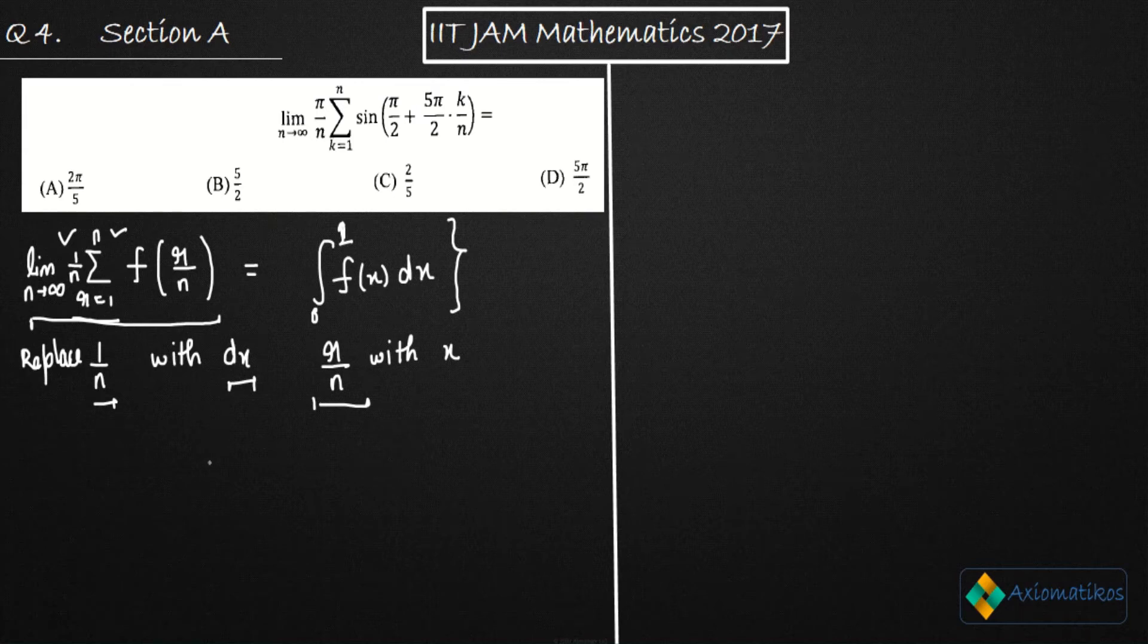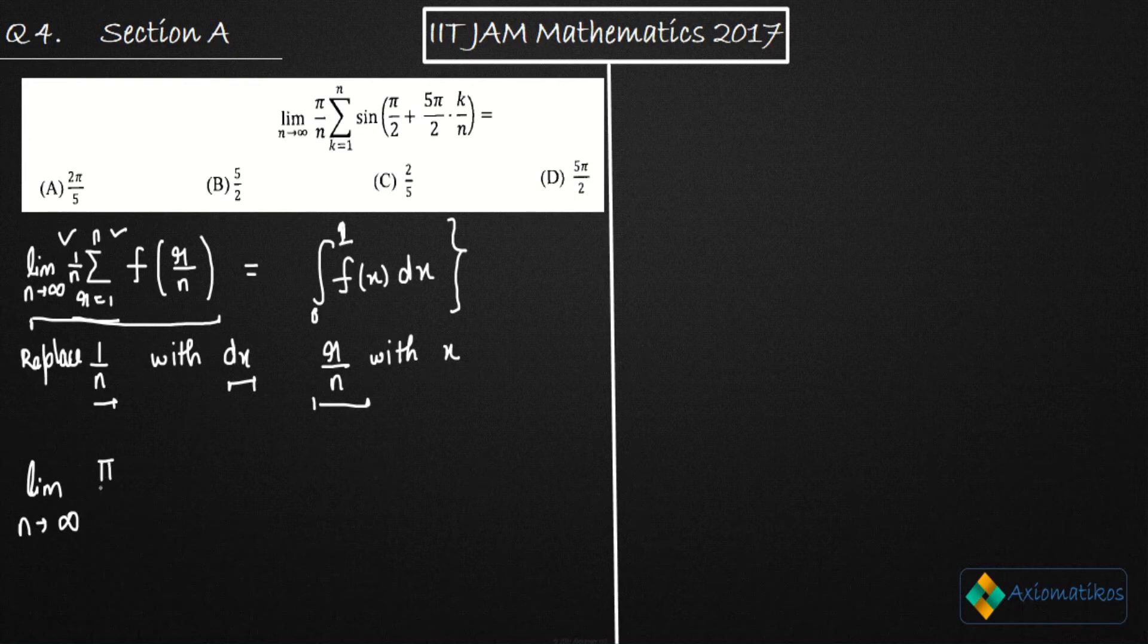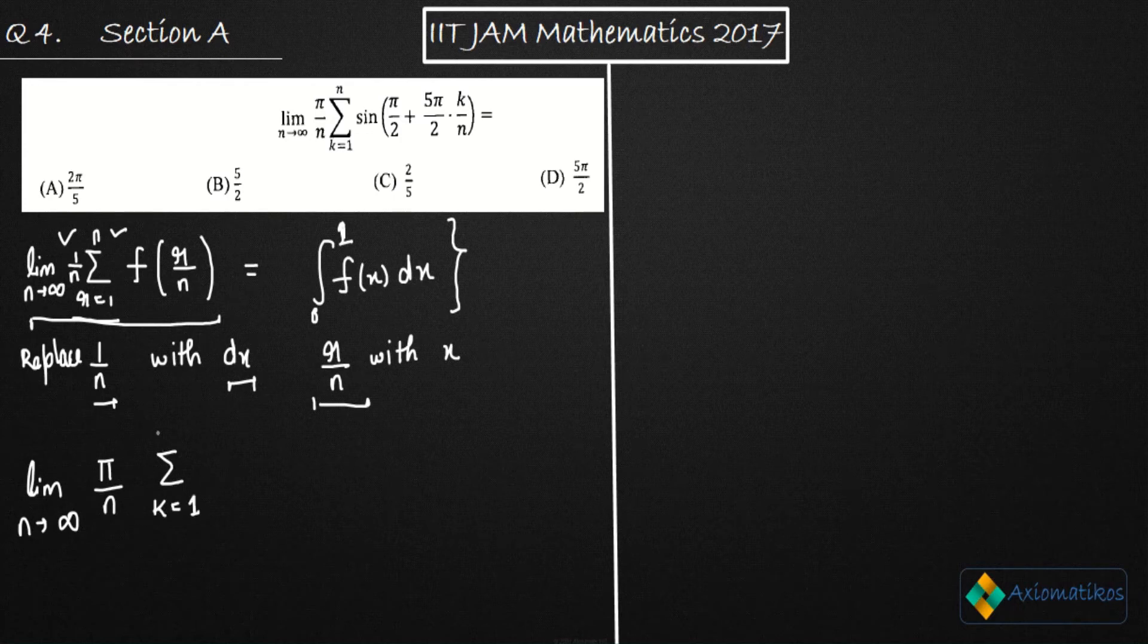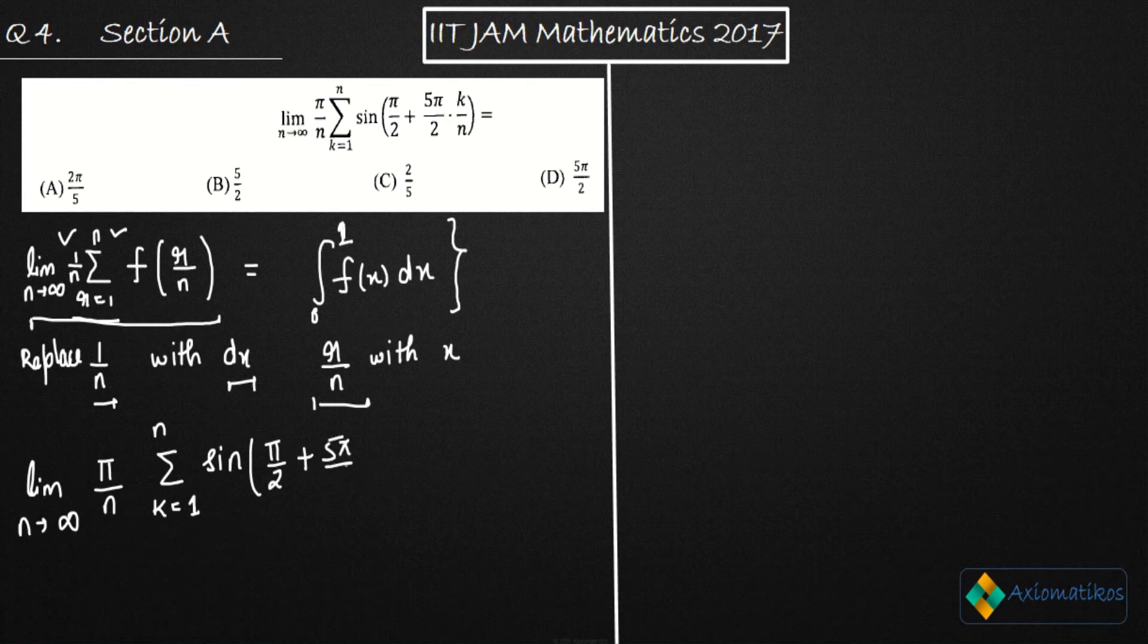As now for you, you have to just remember this theorem or formula and after that you can solve this question. So what you have in your hand is a limit: limit N goes to infinity pi over N summation. In this case, R is replaced with K.